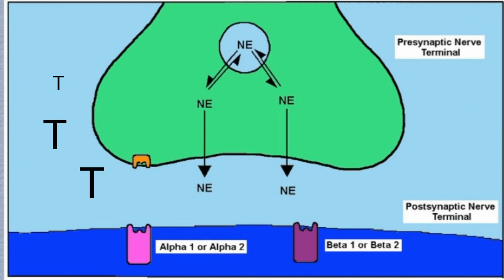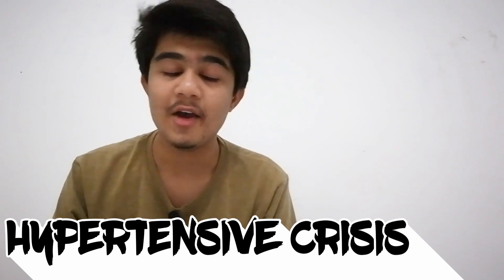Because MAO is inhibited, tyramine degradation does not occur, so tyramine levels become very high. This indirectly activates the sympathetic system, which increases heart rate, conductivity, and contractility. As a result, a hypertensive crisis develops — and this is why it is called the cheese reaction.